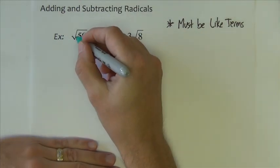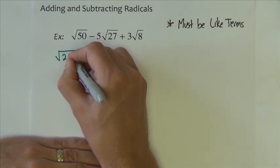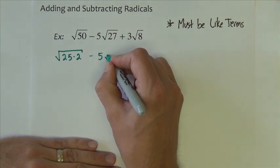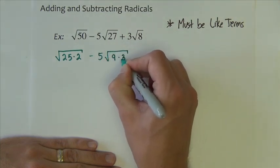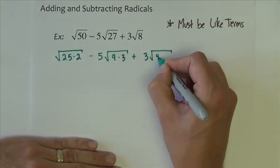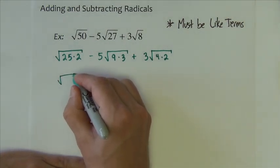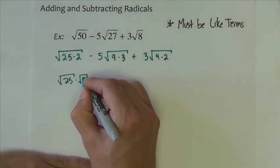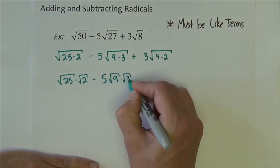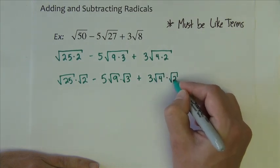50 is 25 times 2. 27 is 9 times 3. And 8 is 4 times 2. So product property says that this is square root of 25 times square root of 2. This one is square root of 9 times square root of 3. This one is square root of 4 times square root of 2.